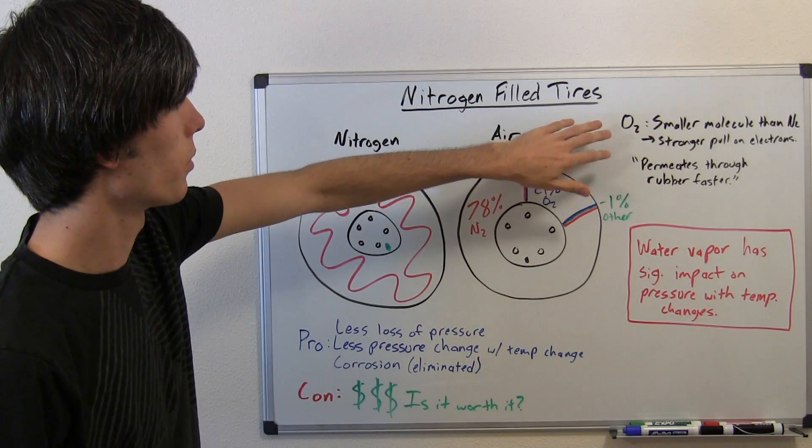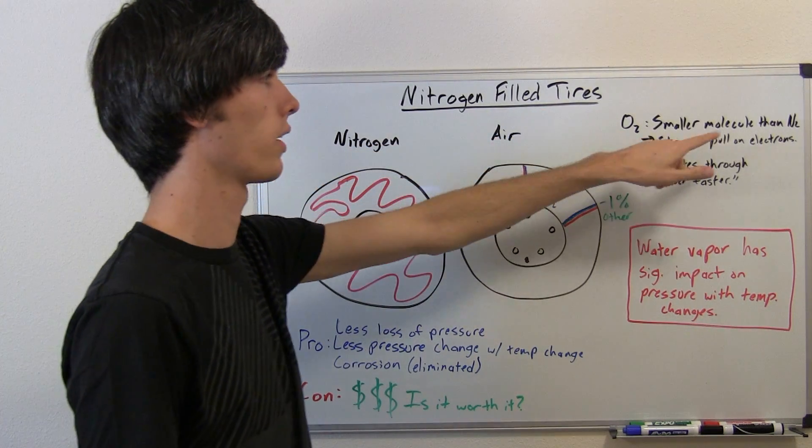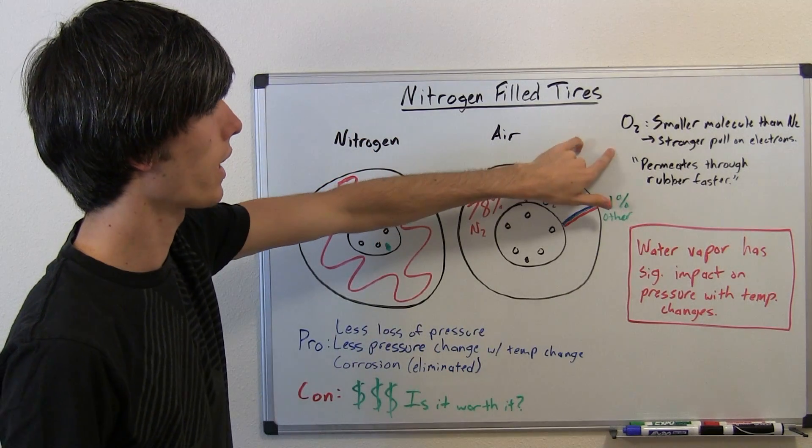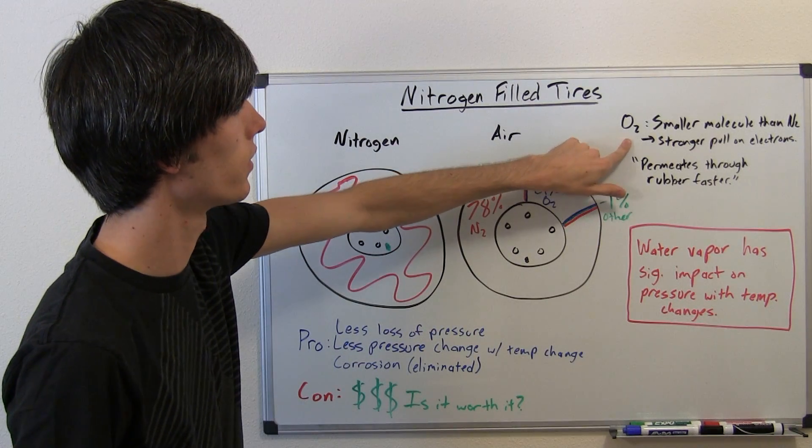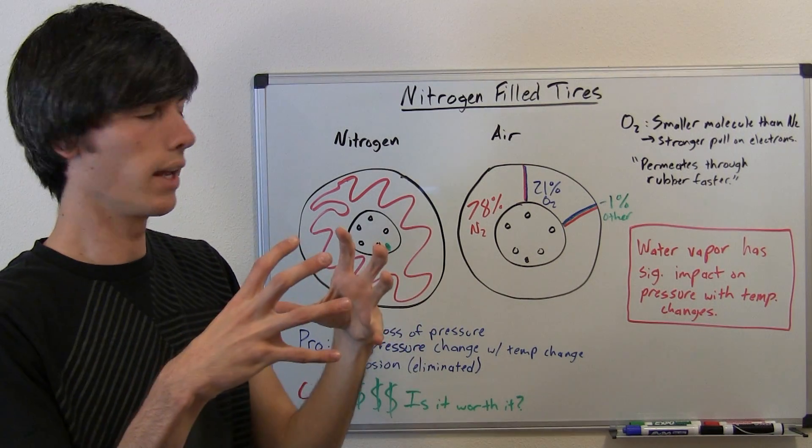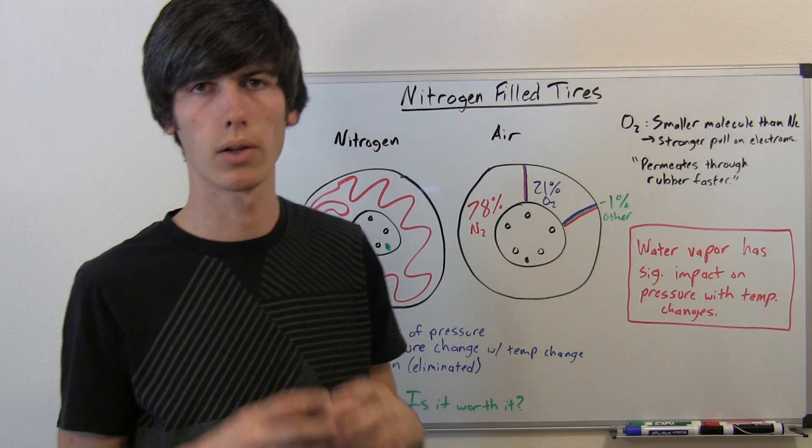Some other facts. O2, oxygen—an oxygen molecule is smaller than an N2 molecule, a nitrogen molecule, even though it weighs more. With the added proton and neutron, what happens is it has a stronger pull on the electrons. So it is actually a very minute amount difference, but it is actually smaller.